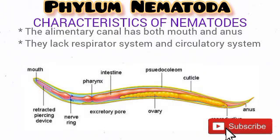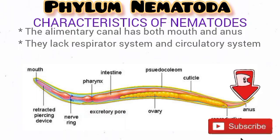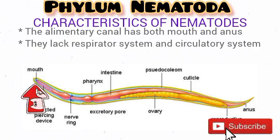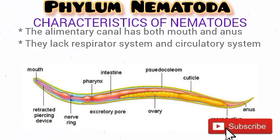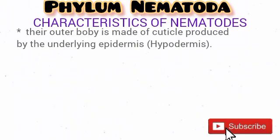Now let's talk about their alimentary canal. Their alimentary canal comprises the mouth, the pharynx, the intestine, and the anus, as you can see from the diagram. Note that they have two openings to the external environment — the mouth and the anus — making their digestive system complete. Remember, organisms with one opening possess an incomplete digestive system, while those with two openings possess a complete digestive system.